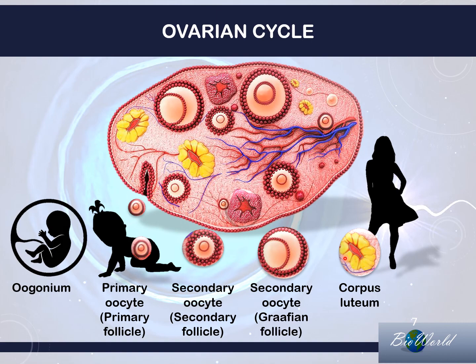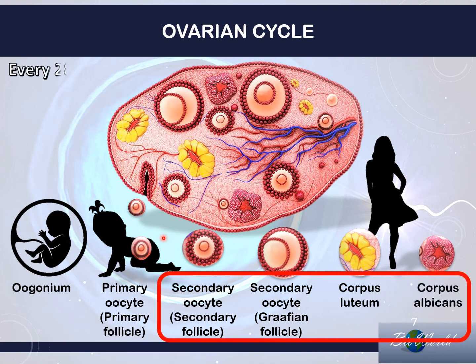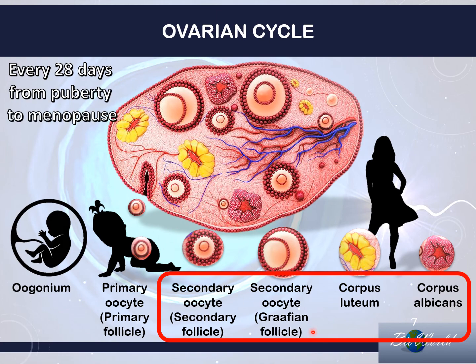The leftover parts of the Graafian follicle will shrink to form what is called the corpus luteum. After some time, the corpus luteum shrinks further and becomes a corpus albicans. The stages from secondary oocyte right up to corpus albicans are repeated every 28 days, from the moment of puberty to menopause.